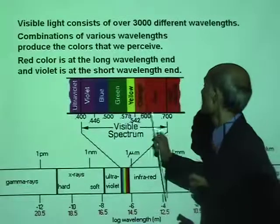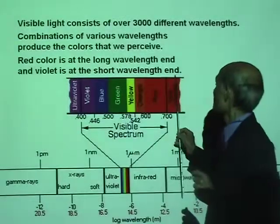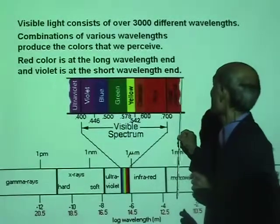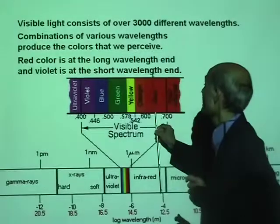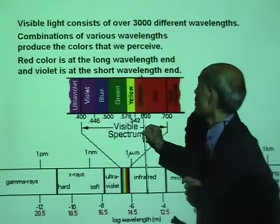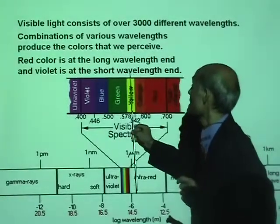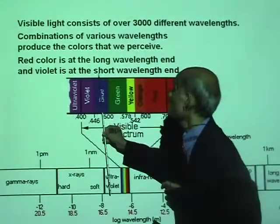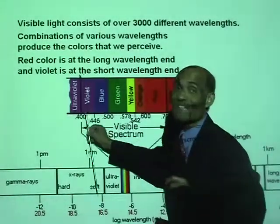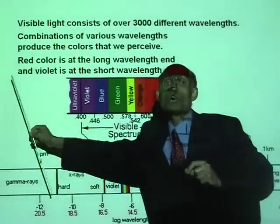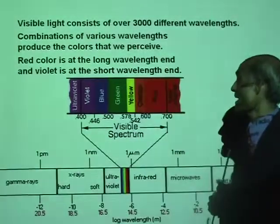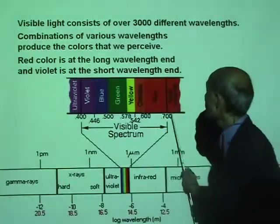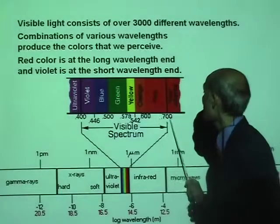Look at our visible light — you have near infrared, then red, orange, yellow, green, blue, violet, and then goes on to ultraviolet. The wavelength of red is the longest at about 700 nanometers, and violet is about 400 nanometers.